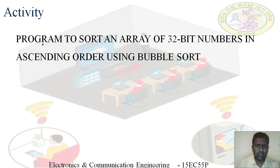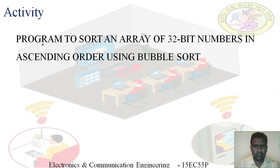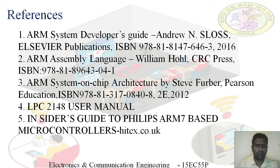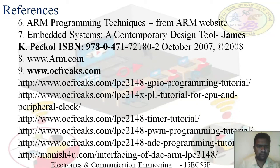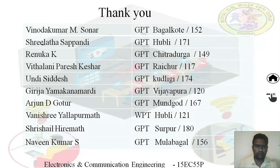A spawn activity for students: the name of the activity is 'Program to sort an array of 32-bit numbers in ascending order using bubble sort'. You have to arrange 32-bit numbers in ascending order using the bubble sort technique. For further information on the program and on the ARM subject, refer to the references and links shown in the slide. Thank you.